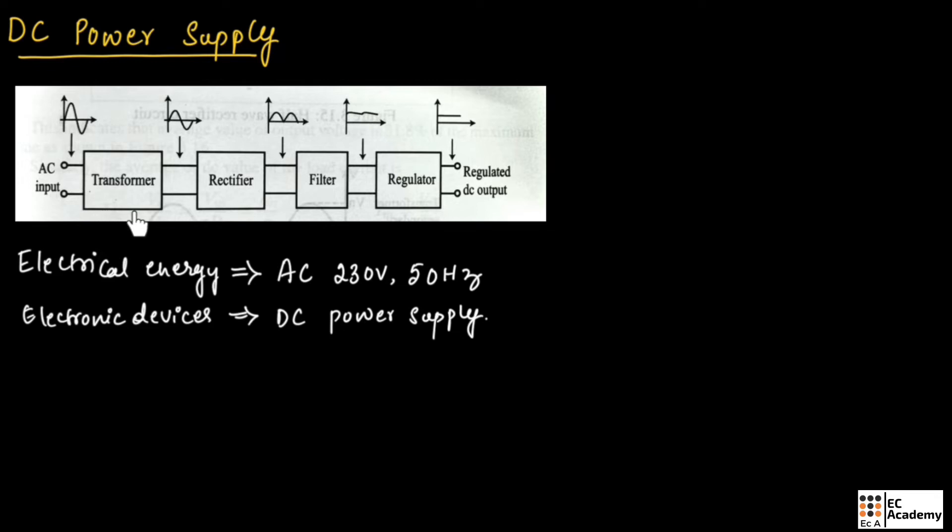This figure shows the block diagram of DC power supply. The first block is the transformer. The basic function of transformer is to step up or step down the input voltage.